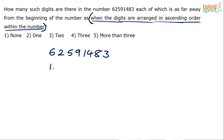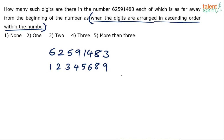The first digit will be 1, then 2, then 3, then 4, then 5, then 6. Remember 7 is not there, and then we have 8 and 9. So basically the original number is 62591483, and when the digits are arranged in ascending order the number becomes 12345689.